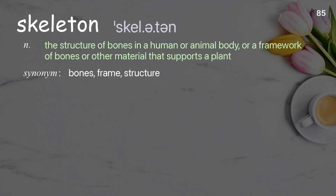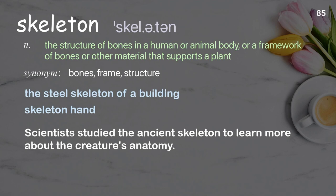Skeleton: the structure of bones in a human or animal body, or a framework of bones or other material that supports a plant. Examples: the steel skeleton of a building, skeleton hand. Scientists studied the ancient skeleton to learn more about the creature's anatomy.